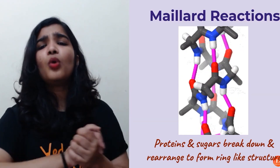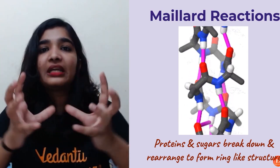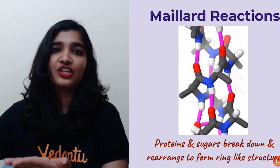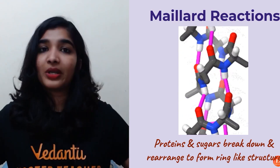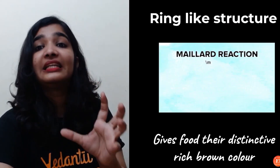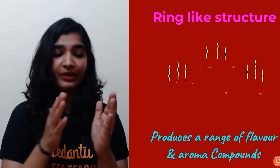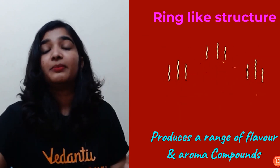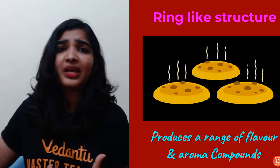What exactly happens is the Maillard reaction. The proteins and sugars break down and rearrange into a ring-like structure. The original structure of the proteins and carbohydrates is lost, and they form a ring-like structure. This ring-like structure gives your food — whether it's barbecue or baking — that brown distinct color. This is because of the Maillard reaction, where proteins and sugars undergo breakage and then form a ring-like structure.